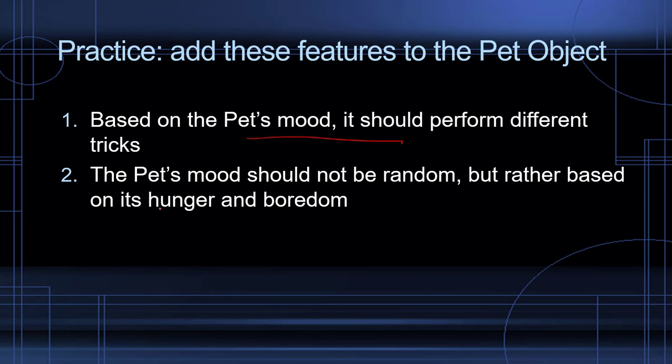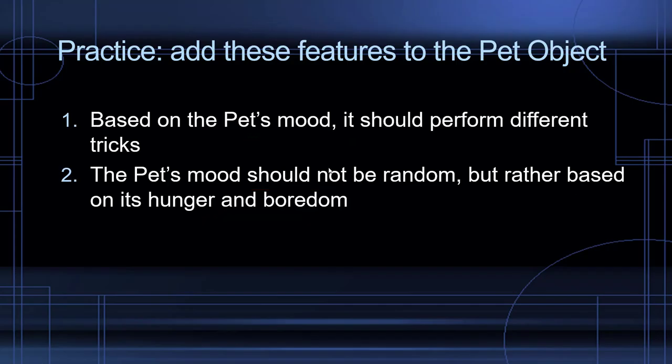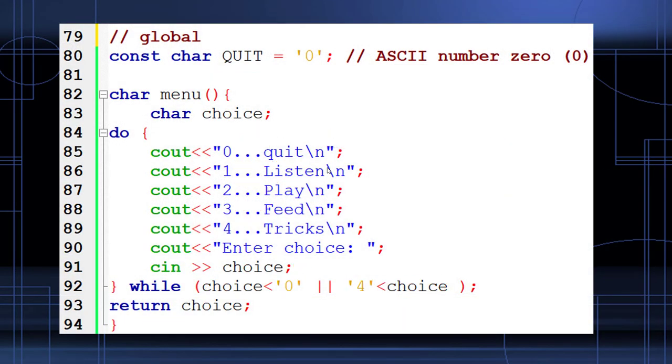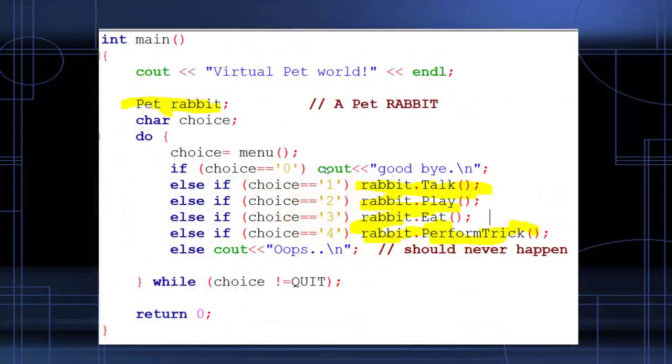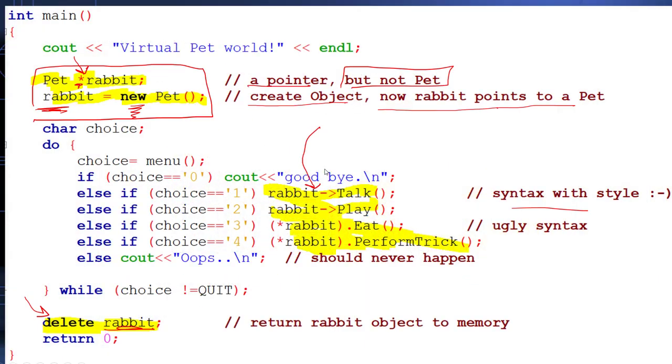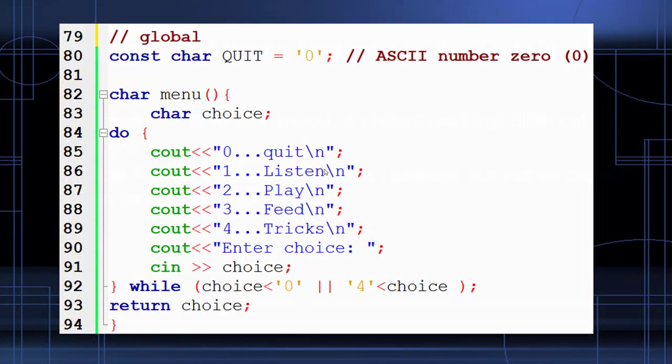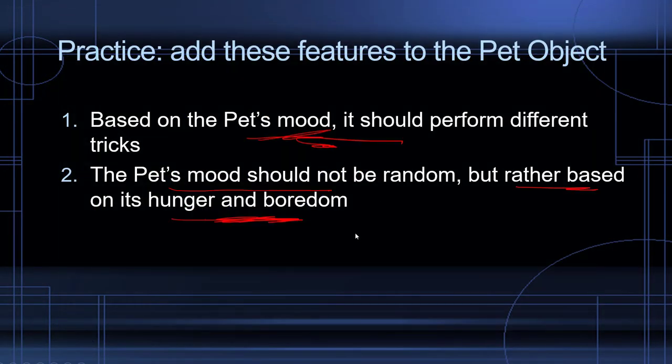Based on the mood you should perform tricks and it really shouldn't be so random. Maybe you can come up with an idea that its mood is based on hunger and boredom and based on the mood, not a random number, perform a trick. Maybe you could have a little randomness in there but not fully. That brings me to the end of this and what you need to do is figuring out how to put this all together. It's pretty much there to build our pet rabbit.